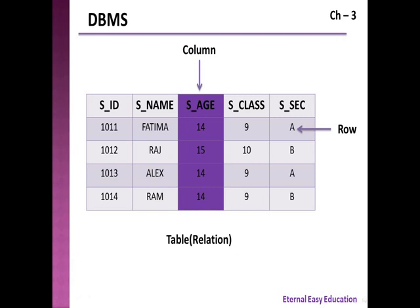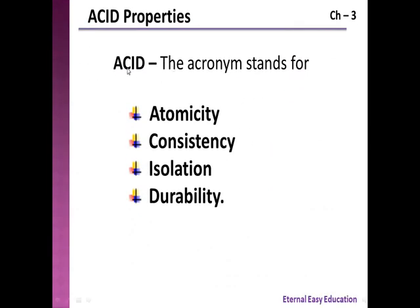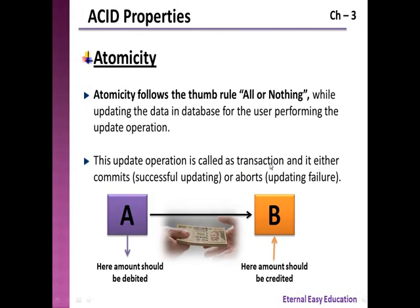Now let's come to our main topic: ACID properties — Atomicity, Consistency, Isolation, and Durability. These are the four properties that a database management system should have.